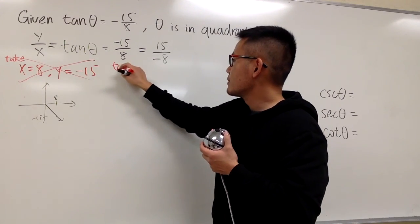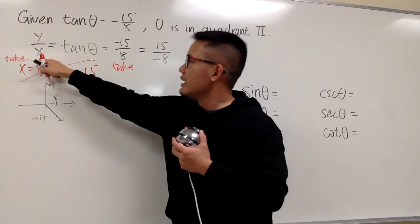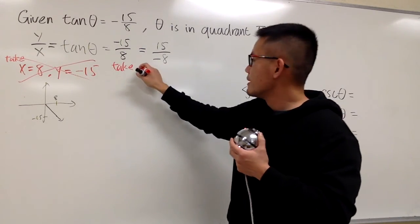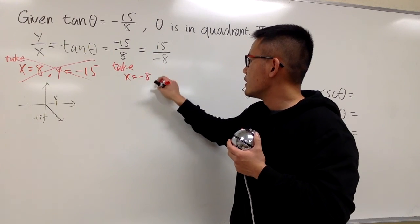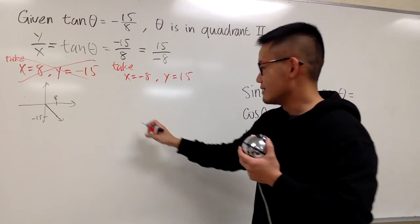So now we are going to take y being positive 15, x being negative 8. So take x being negative 8, y equals to positive 15. And now I'll draw this bigger, because now this is what we need.